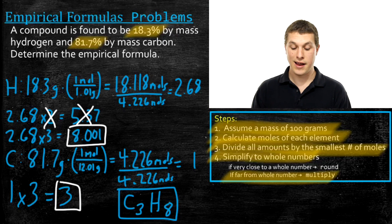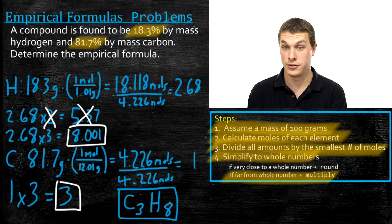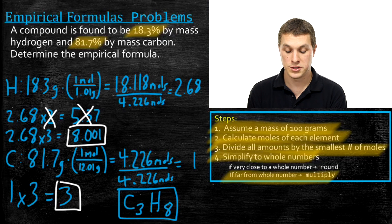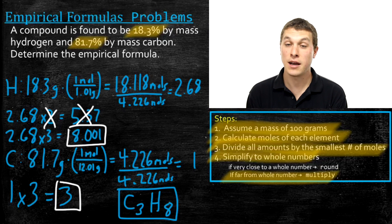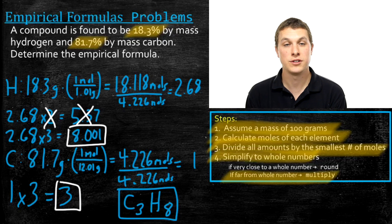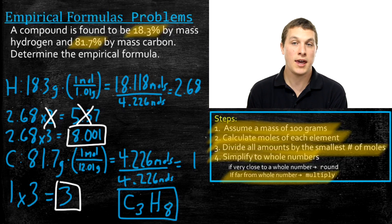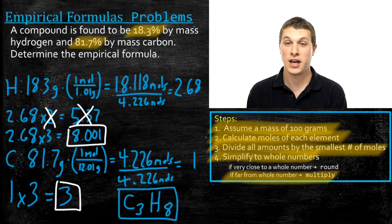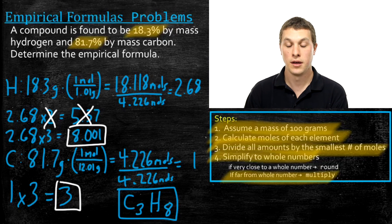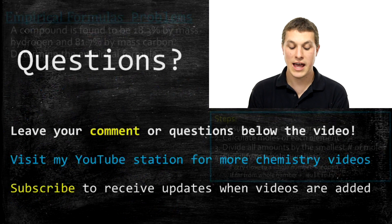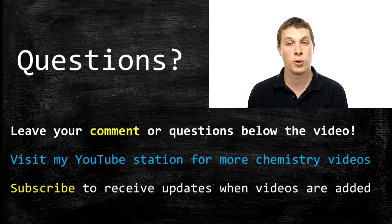So C3H8 — three carbons to every eight hydrogens — is the same ratio as 2.68 hydrogens per carbon, just expressed as whole numbers. To review: the empirical formula tells you the ratio of the number of atoms of each type in your compound. This is useful because many lab experiments only give you the percent by mass of each element, and from that information we can't determine the exact molecular formula — only the ratio. That's why it's called the empirical formula: it's what we can directly measure. Please ask any questions below and visit the channel for other chemistry videos.